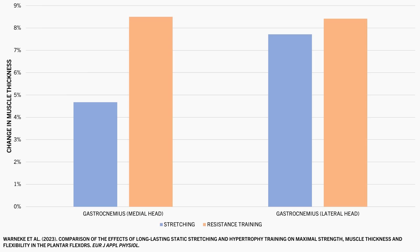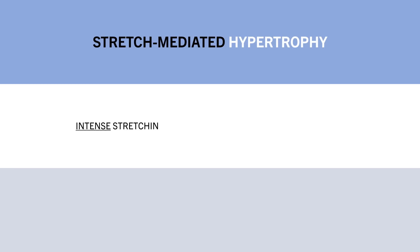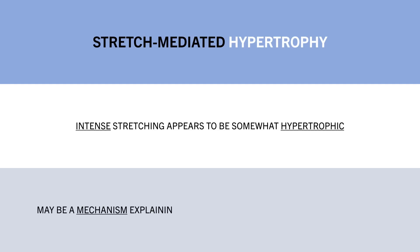So although I wouldn't recommend static stretching as the most efficient way to build muscle, it does provide some mechanistic evidence. It seems that prolonged intense stretching itself appears to be somewhat of a hypertrophic stimulus independent of resistance training, and this might be one mechanism by which long muscle length training could be effective.